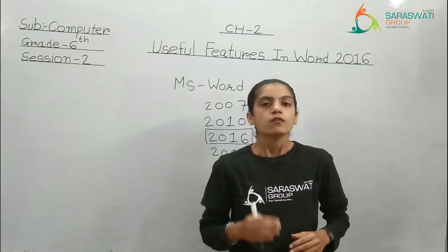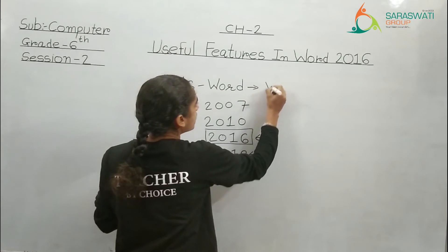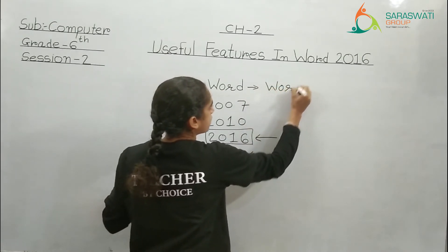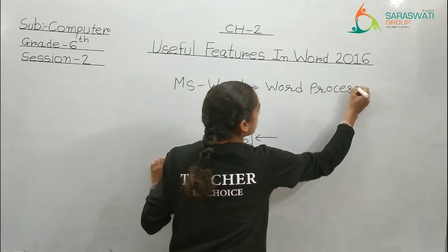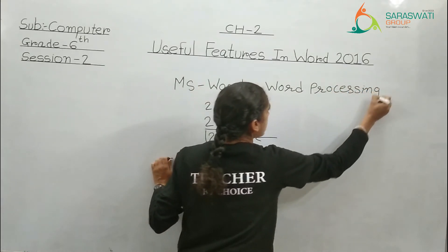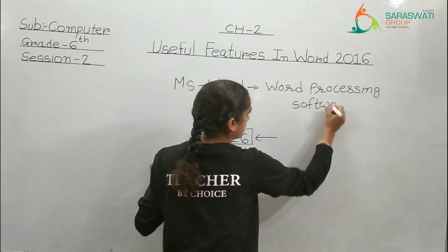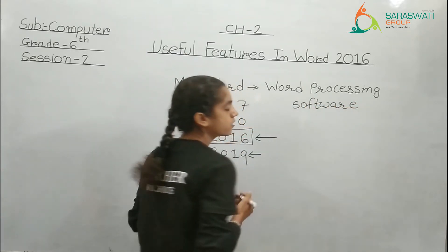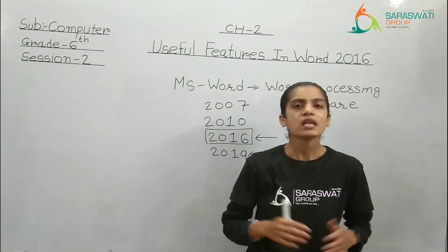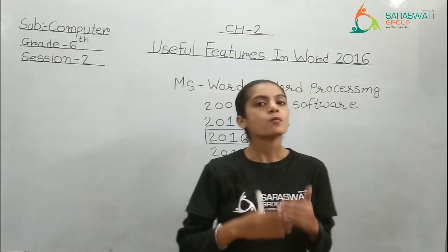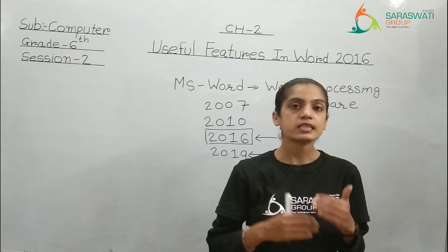Word is considered as Word Processing Software. That means it allows us to type in text and we can do formatting of that text, like changing of color, setting up of margin, and many more things. So from all those features, we are going to learn a few features in this chapter.